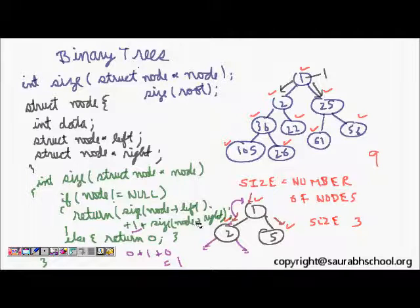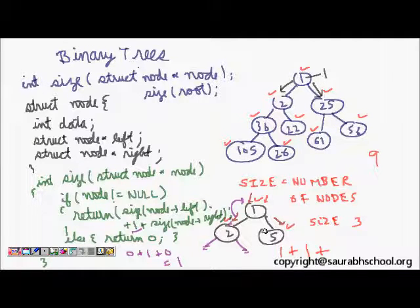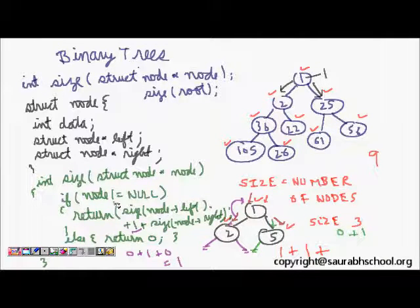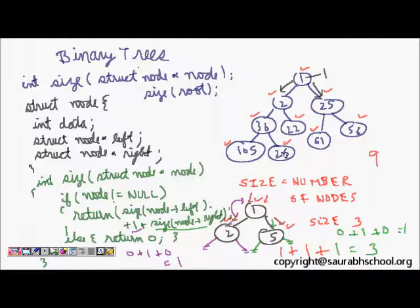Continuing the trace: size of node left is 1. We then go to size of node right, which also computes: null left returns 0, plus 1 for itself, plus null right returns 0, giving 1. So at this level we get 1 + 1 + 1 = 3. This is the code to find the size or number of nodes in a given tree.